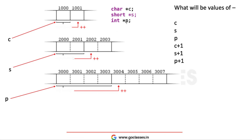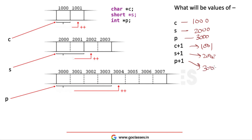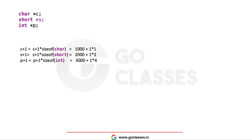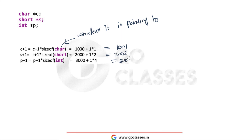Suppose I declare three pointers: a character pointer C with value 1000, a short pointer S with value 2000, and an integer pointer P with value 3000. Then C + 1 = 1001 (one character away), S + 1 = 2002 (one short away), and P + 1 = 3004 (one integer away). In formula form: C + 1 = C + sizeof(char), S + 1 = S + sizeof(short), P + 1 = P + sizeof(int).